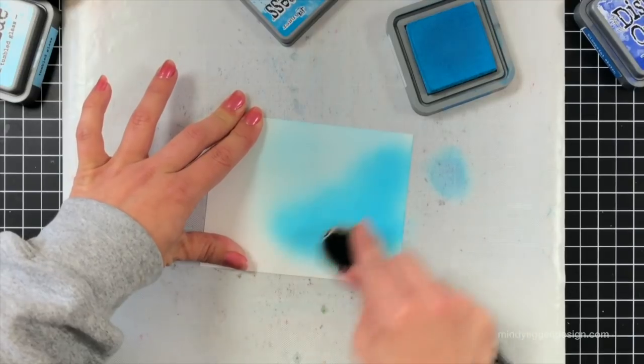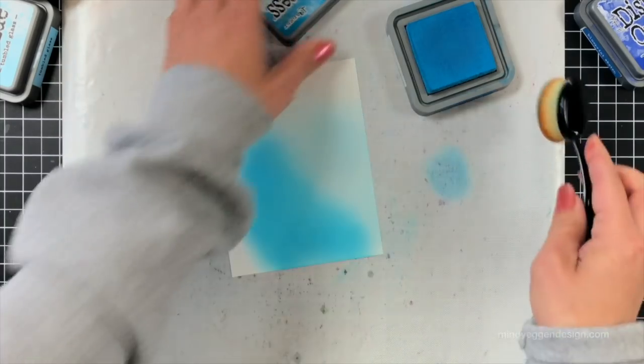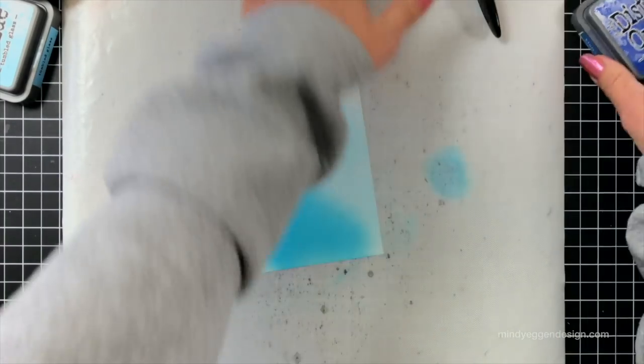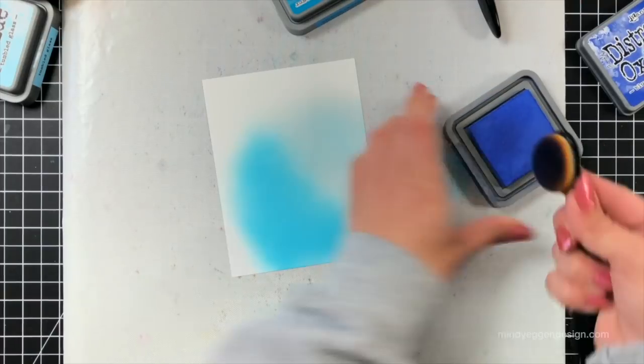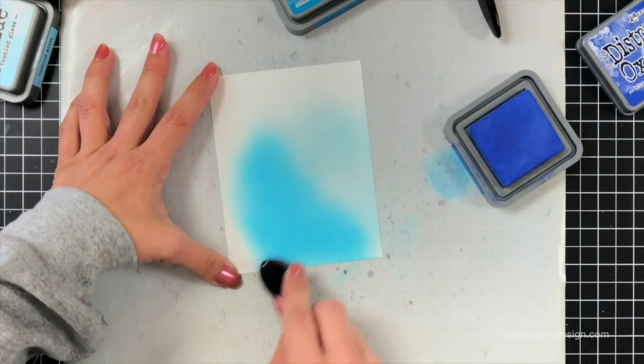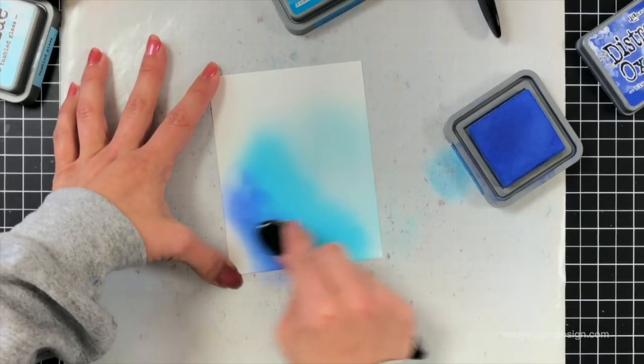So once again just doing some circular motions to apply that ink and you can see the best way for me to have control over these brushes is I'm holding it way towards the top so right at the head of the brush and that was just easier for me so I can control how my brush is moving and how much pressure I'm applying.